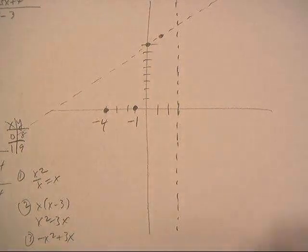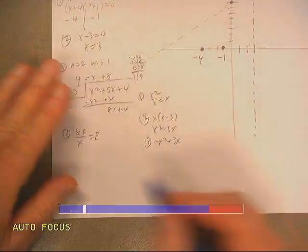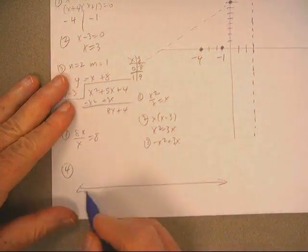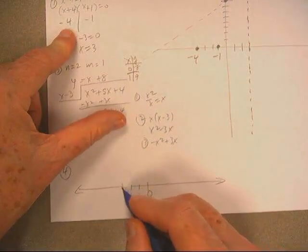And now all we need to know is where we're positive and where we're negative. Okay, so let's see. Where do we want to put that? Let's put it down here. Okay, let's go right here to this one. One, two, three, four.